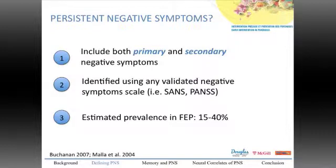To define persistent negative symptoms, the literature — specifically Mala and Buchanan in 2007 — has defined negative symptoms as including both primary and secondary negative symptoms, though this remains a matter of debate. Primary negative symptoms are intrinsic to the illness, whereas secondary negative symptoms could result from depressive or positive symptoms. Validated scales such as the SANS or PANSS can be used to identify them. The estimated prevalence in first episode is between 15% and 40%, a large range due to different definitions applied across studies.